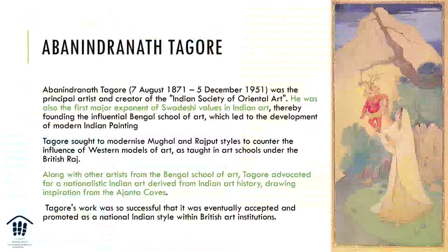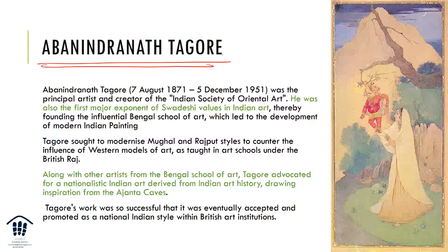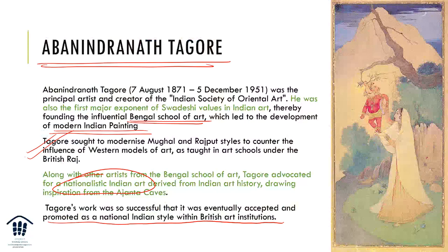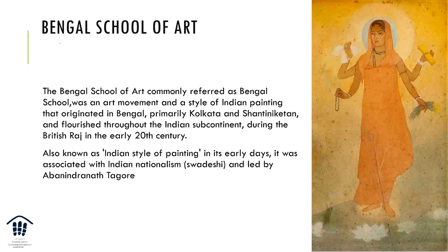Abanindranath Tagore, born in 1871, was a principal artist and creator of the Indian Society of Oriental Art. He was the first major exponent of Swadeshi values in Indian art and founded the Bengal school of art, which led to the development of modern Indian painting. He sought to modernize the Mughal and Rajput style to counter the Western model of art taught under the British Raj. Along with Bengal school artists, he advocated for a nationalistic Indian art drawing inspiration from the Ajanta caves. His paintings were so valued that they were promoted as a national Indian style even within British art institutions abroad. The movement originated in Shantiniketan and Kolkata, and Bharata Mata is his biggest example.